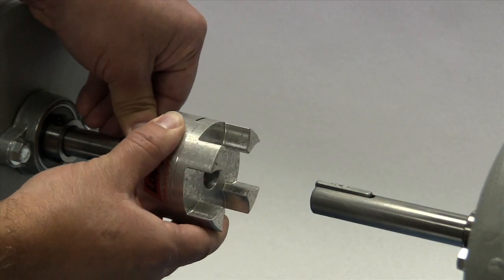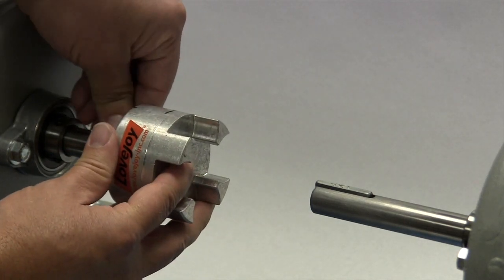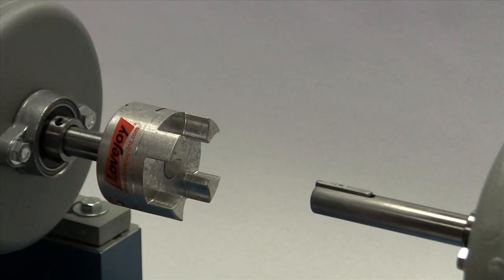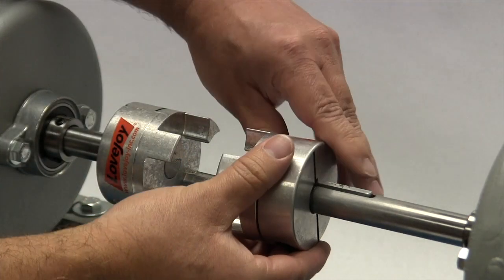Please note that the Lovejoy curved jaw coupling hubs are manufactured with a clearance or slip fit and the hubs should slide onto the shafts with little or no difficulty.